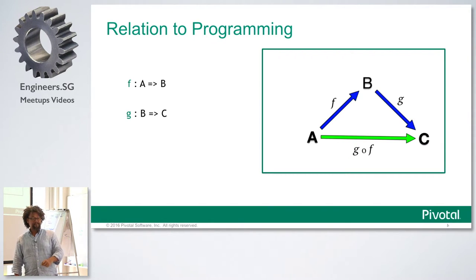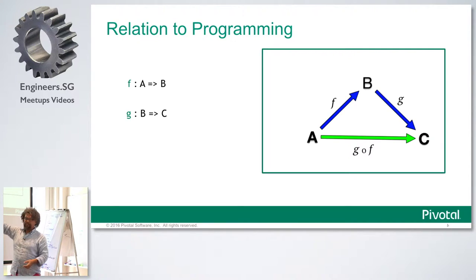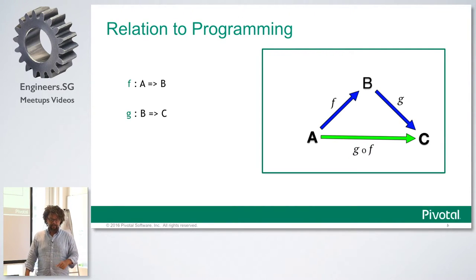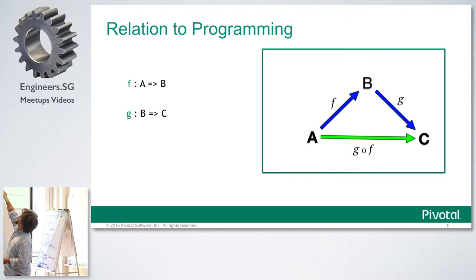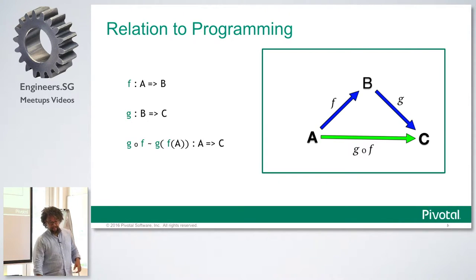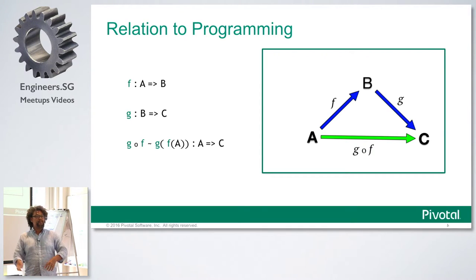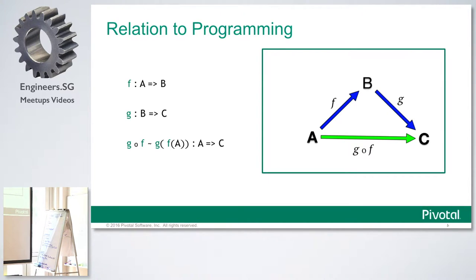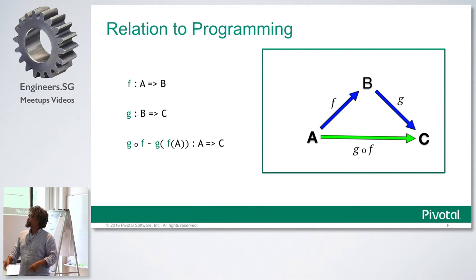G is a function that takes an input of B and returns something of C. Then G following F — that little notation at the bottom of the screen — is a special mathematical notation that category theorists use. G following F translates into the composition of these two functions, meaning you call one and then the other. You call function F first, pass the output into function G, and that gives us a new composed function which takes an input of A and gives us a result in C.